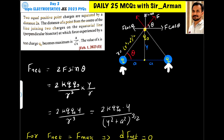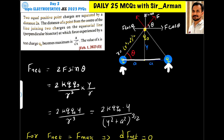Two equal positive charges are separated by a distance 2a. The distance of a point from the center of the line joining the two charges on the equatorial line at which the force experienced by a test charge q naught becomes maximum is to be found. This is the line joining the two charges, and this is the perpendicular bisector where we place charge q naught at distance y.